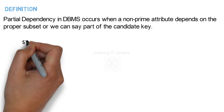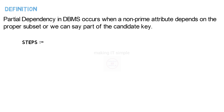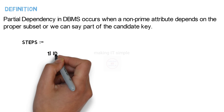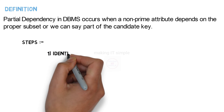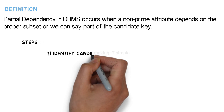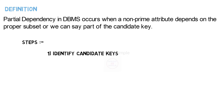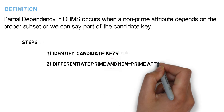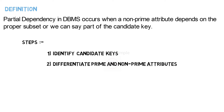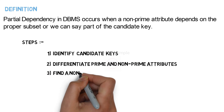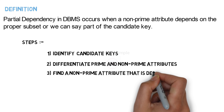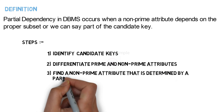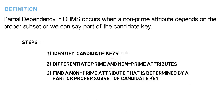To identify partial dependency in a relation, you must follow these steps. In the first step, identify the candidate keys in the relation. In the second step, differentiate the prime and non-prime attributes. In the last step, find a non-prime attribute that is determined by a part or proper subset of a candidate key.